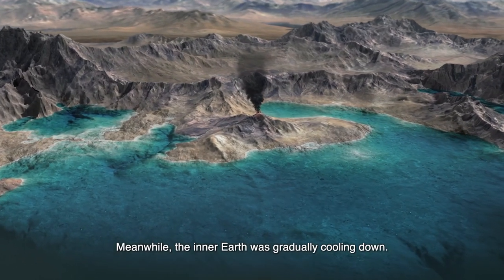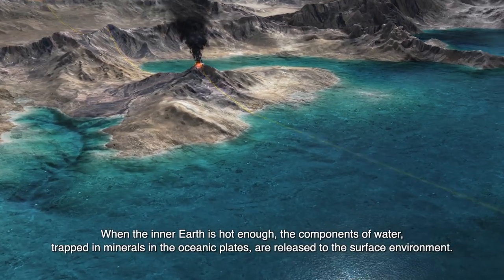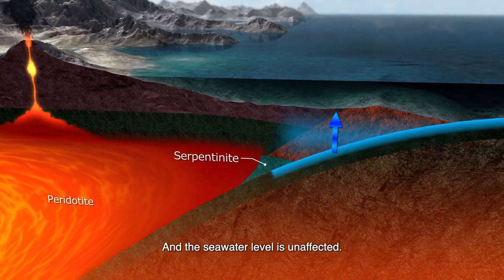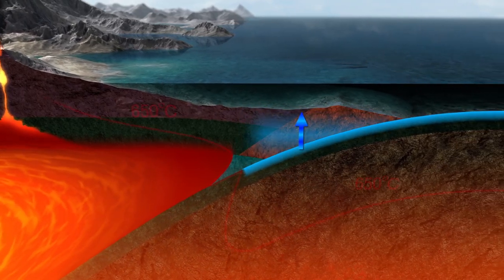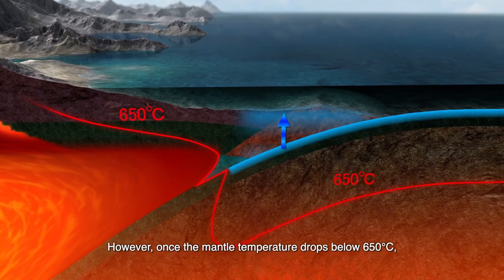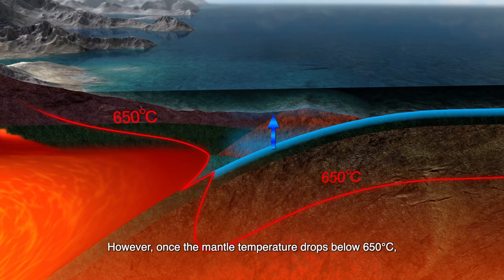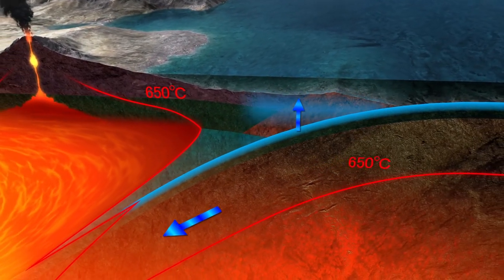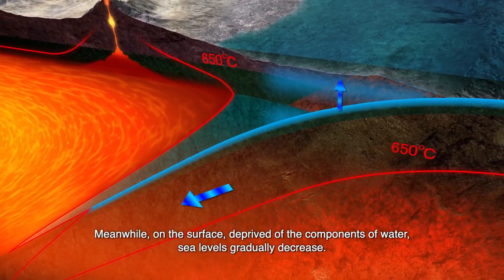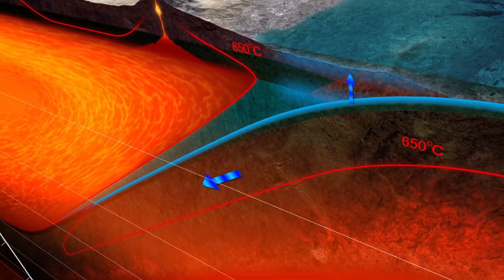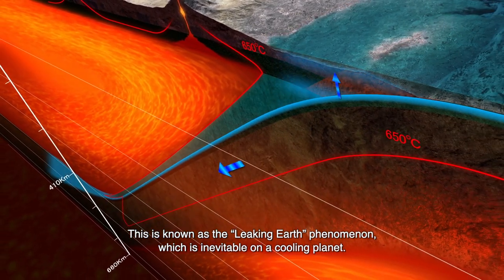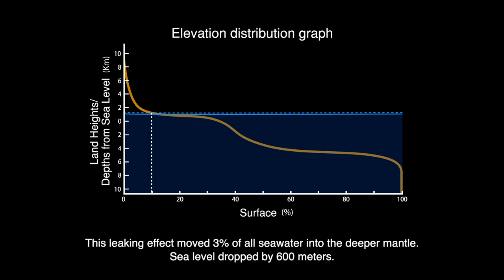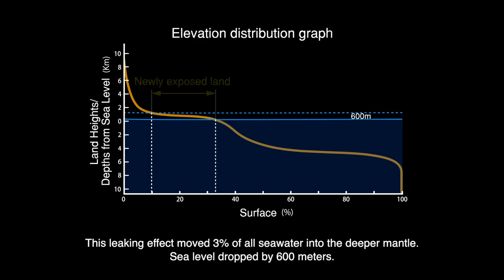Meanwhile, the inner Earth was gradually cooling down. When the inner Earth is hot enough, the components of water trapped in minerals in the oceanic plates are released to the surface environment, and the seawater level is unaffected. However, once the mantle temperature drops below 650 degrees Celsius, minerals carry these water components down into the upper mantle. On the surface, deprived of these water components, sea levels gradually decrease. This is known as the leaking Earth phenomenon, which is inevitable on a cooling planet. This leaking effect moved 3% of all seawater into the deeper mantle, and sea level dropped by 600 meters.